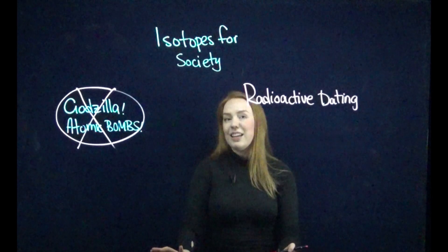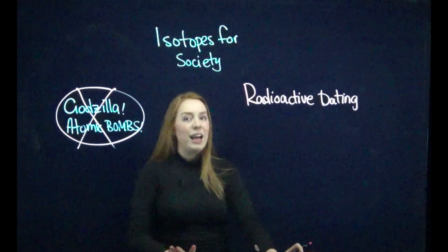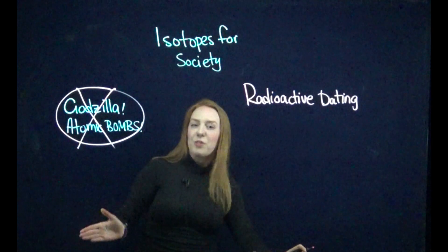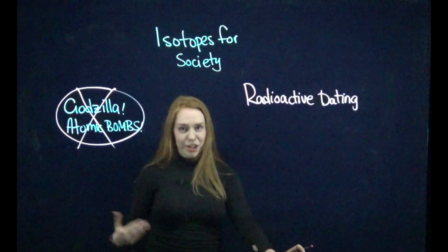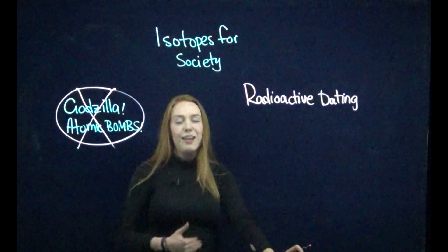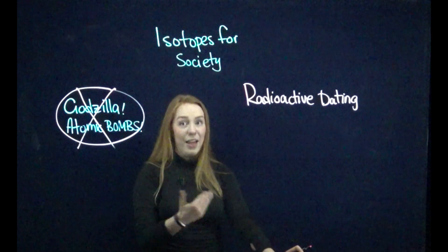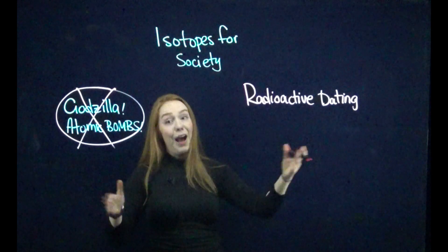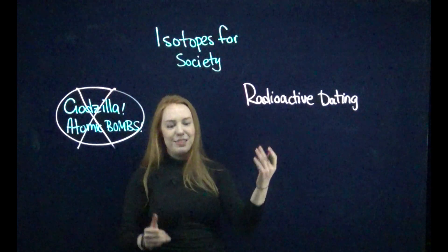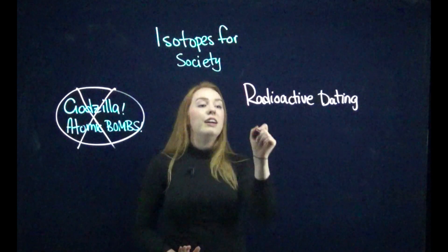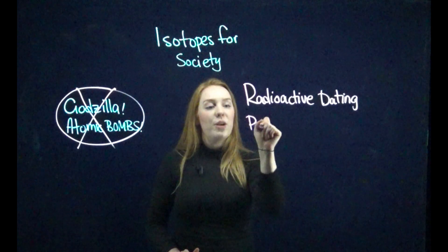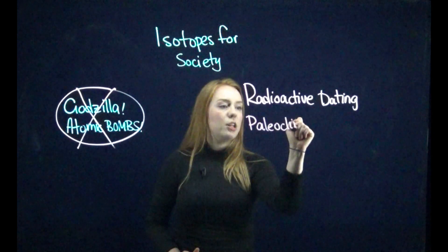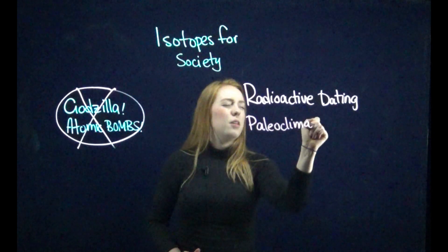Radioactive dating is a technique we can use to tell us how old something is, be it a dinosaur fossil or even just an ancient human fire pit. We use different isotopes and their decays to tell us how old something is — really cool, really interesting.